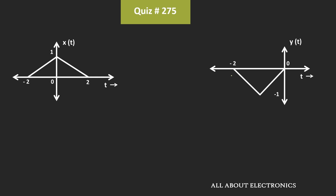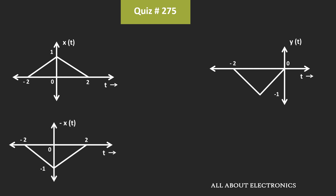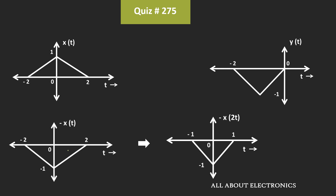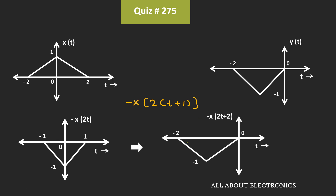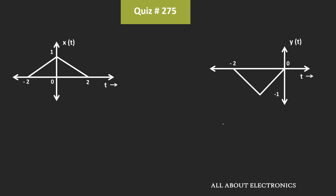Let's find the relationship between x(t) and y(t). If we invert the signal x(t), then that signal will look like this. After the inversion, if we compress this signal by a factor of 2, the compressed signal can be represented like this. Before compression, the signal existed from minus 2 to plus 2, but after compression it will only exist from minus 1 to 1. To get the signal y(t), we need to shift this signal by 1. With this scaling factor 2, if we shift the signal by 1, then we will get y(t). Mathematically, it is equal to minus x(2t+1). So basically, y(t) = -x(2t+1).